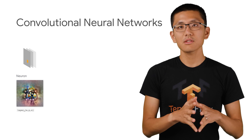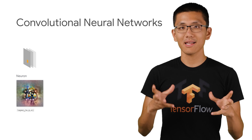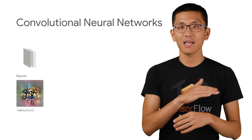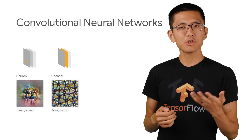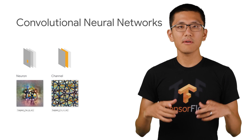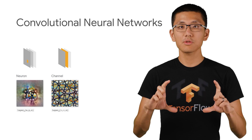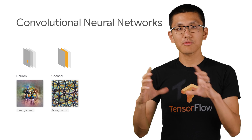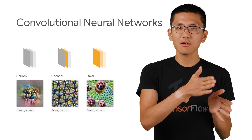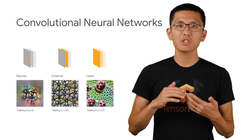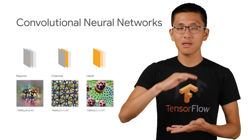So now let's zoom out a bit and see how multiple neurons can be connected in a specific channel. A single channel is made up of a two-dimensional rectangle of neurons, which are used to process the previous layer's outputs. There are many channels in a layer, each channel stacked on top of the other, much like a layer cake.